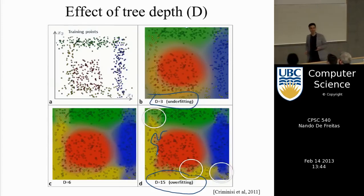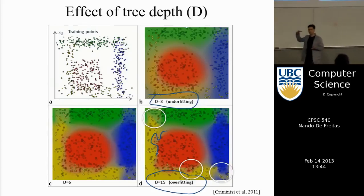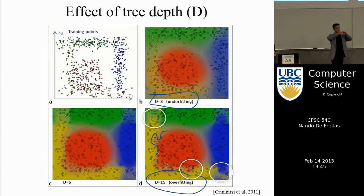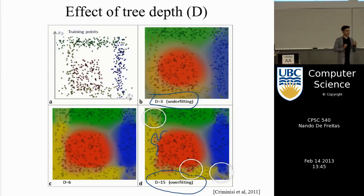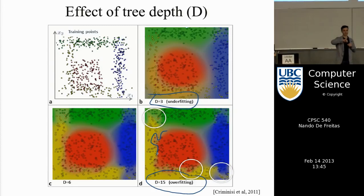A student suggests Bayesian optimization to automate these choices — exactly the technique from last week. All these choices are just parameters of your algorithm. You define a Gaussian process over all the parameter choices, pick one parameter setting, evaluate the forest's cross-validation performance, and that gives the error for Bayesian optimization. Then try a different set of parameters and cross-validate again. Cross-validation is expensive and building a forest is expensive, so you want to do as few iterations as possible — that's why you balance exploration and exploitation. A beautiful cross-project for anyone who wants to try that.